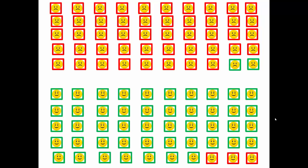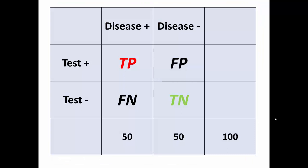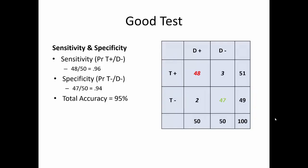Now let's go to the 2x2 table. You'll remember that in the upper left-hand corner we have true positives, and in the bottom right-hand corner we have true negatives. Let's fill in the information from the results we just saw. As you can see, sensitivity is quite high — 48 out of 50, or 0.96. And specificity is also quite good — 47 out of 50, or 0.94. Our total accuracy is very good at 95%. So this is a test that performs well.